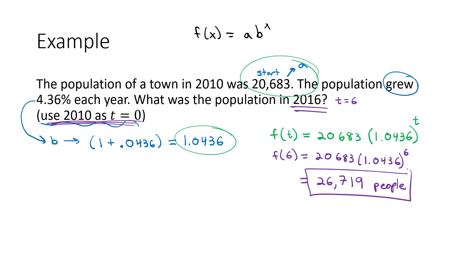And now we have the new population of our town by building an exponential equation by identifying the starting point and the multiplier based on the percent.